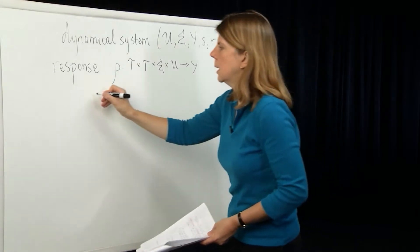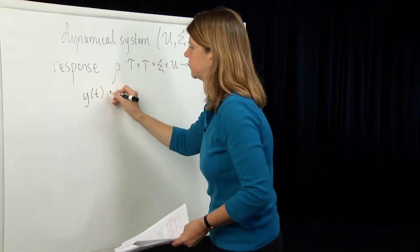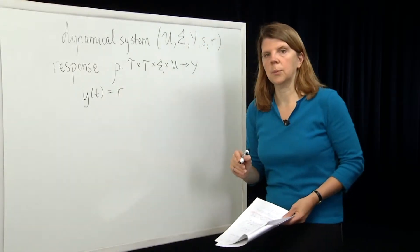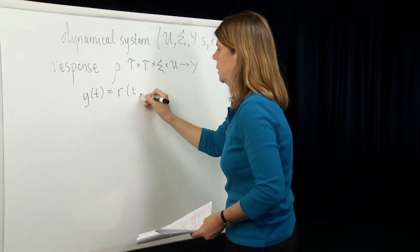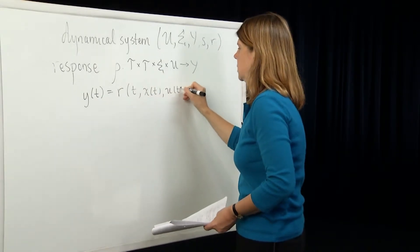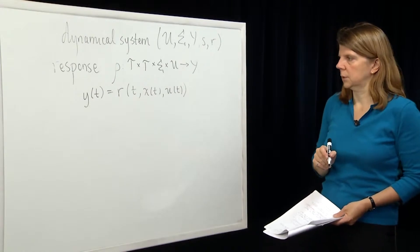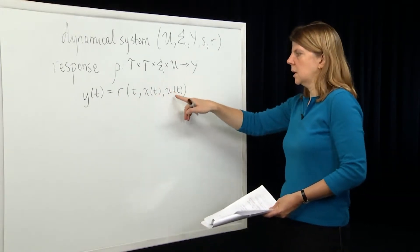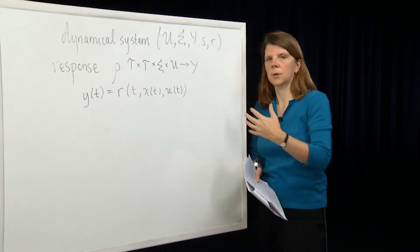The output at time t is equal to the output readout map at time t, given the current value of the state at time t and the current value of the input at time t. This is from our state space, and this is from the range space of our input functions.